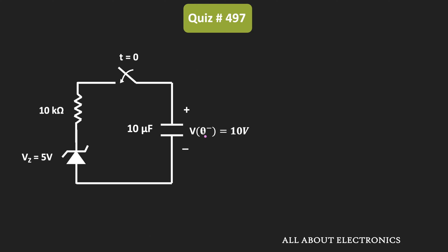If you see this circuit, the initial voltage across the capacitor is equal to 10V, and at time t equal to 0, this switch has been closed. That means at time t equal to 0, if we see the equivalent circuit, this is how it will look like. As soon as the switch gets closed, this capacitor will start discharging through this resistor as well as the Zener diode.